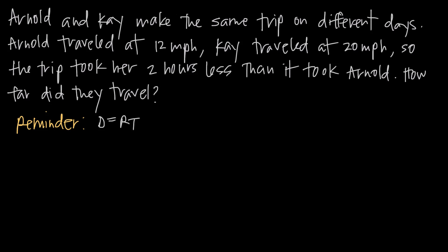In this video we're going to be doing a uniform motion problem. We call these types of problems uniform motion problems because the two objects or two people that are moving move in the same way, and most commonly this means that they travel the same distance. In this particular problem, we're told that Arnold and Kay make the same trip but they do it on different days — Arnold makes the trip on Tuesday, Kay makes the trip on Thursday. The reason they tell you they're making the same trip is to let you know that they travel the same amount of distance.